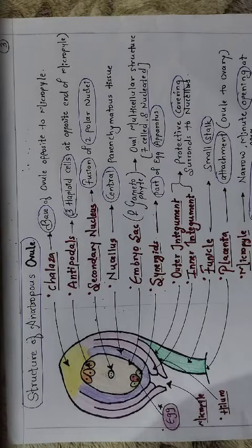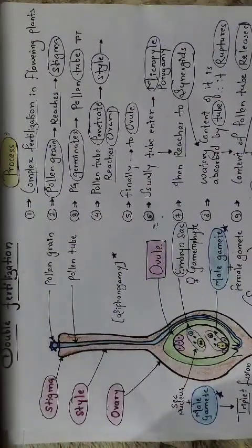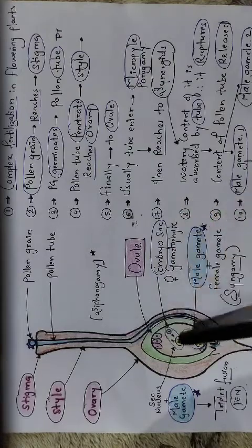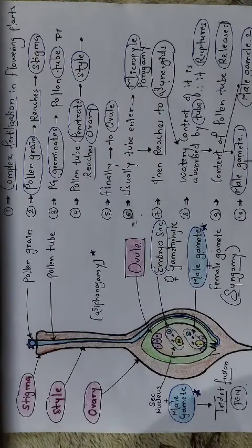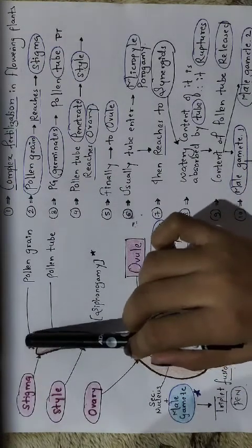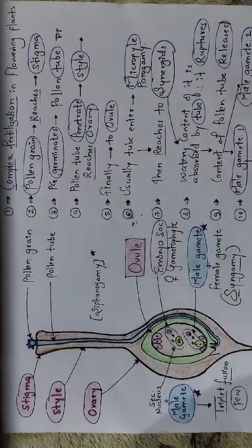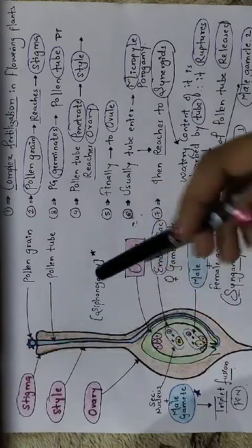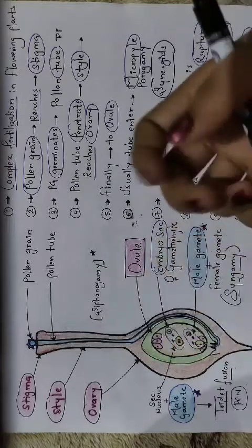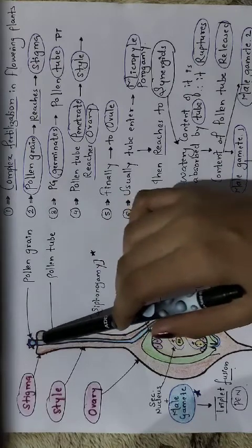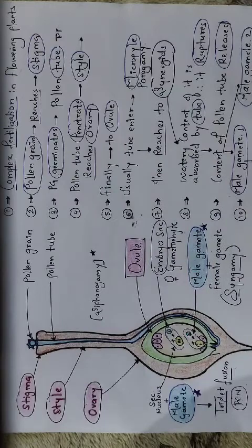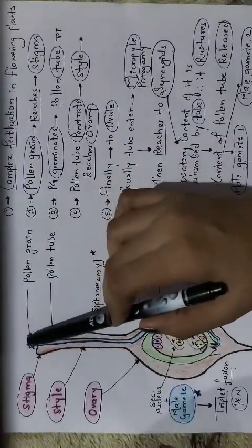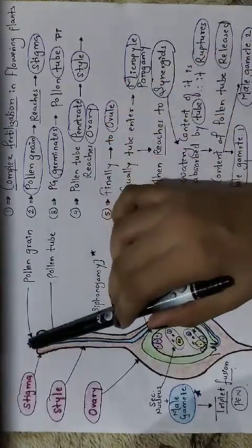Now we focus on how exactly double fertilization takes place. This is the gynoecium — you can see the stigma, the style, and the ovary. This entire structure is the carpel. The small bluish-colored cell is the pollen grain, called the male gametophyte as it carries male gametes. When pollen falls on the stigma — which is the receptor or receiving part — it adheres because the stigma is rough and has a sugary substance that gets absorbed by the pollen grain.